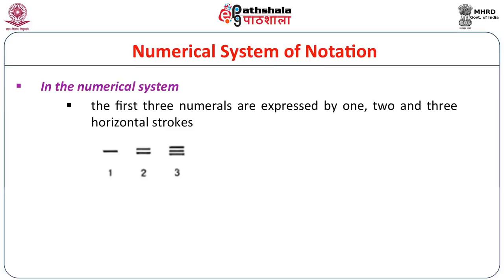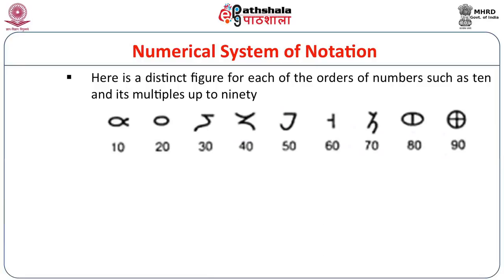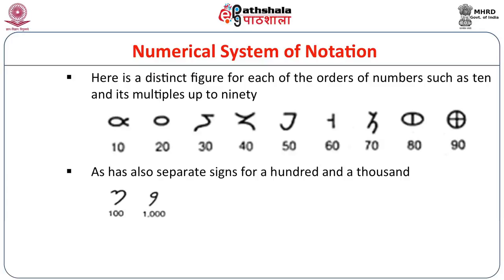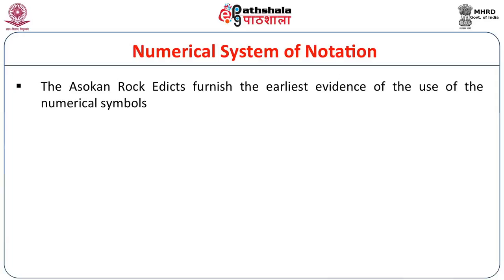In this numerical system, the first three numerals are expressed by 1, 2 and 3 horizontal strokes. From 4 to 9, there are special symbols. There is also a distinct figure for each of the orders of numbers such as 10 and its multiples up to 90, and separate signs for 100 and 1000. Thus there are 20 basic signs. Intermediate units are expressed by simply adding their signs. The Ashokan rock edicts furnish the earliest evidence of the use of numerical symbols.